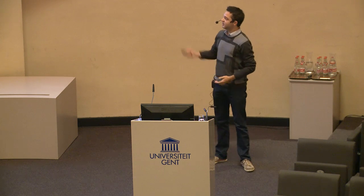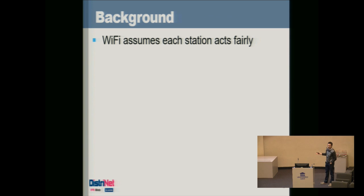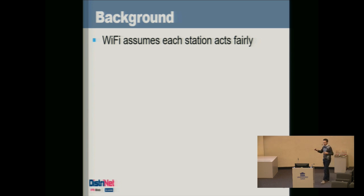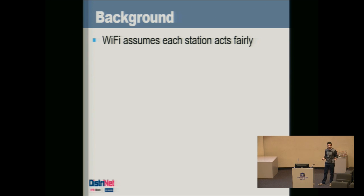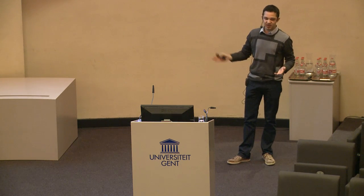To start, I'll give a quick introduction about the Wi-Fi protocol. Wi-Fi basically assumes that each device behaves in a fair manner. If a device wants to transmit a packet, it first checks whether someone else is already transmitting. If that's the case, it waits, and even waits a few microseconds after that transmission is done to give other stations a chance to transmit. If every device sticks to this protocol, we get a fair division of the global bandwidth.